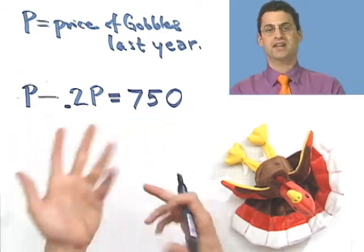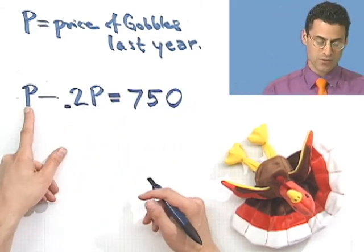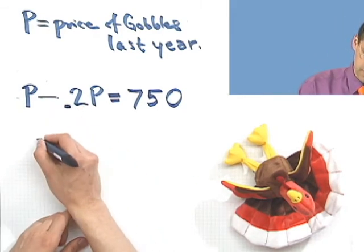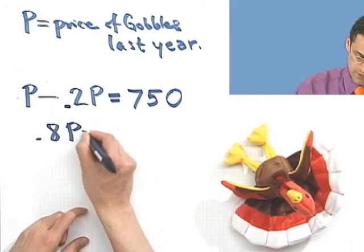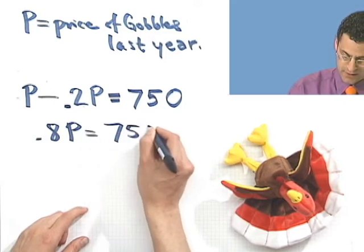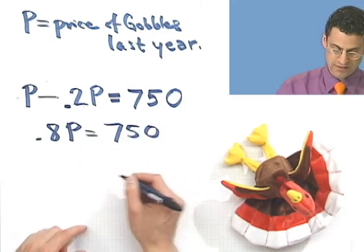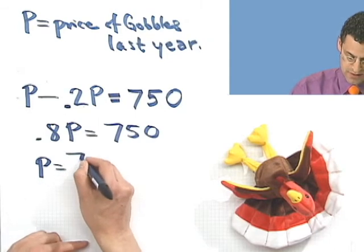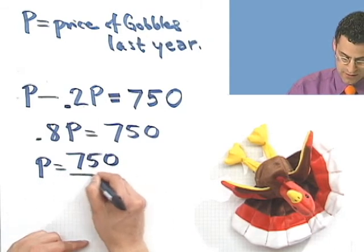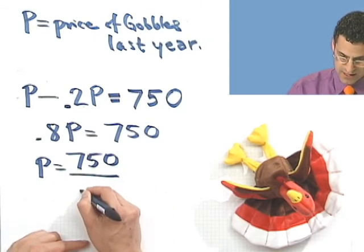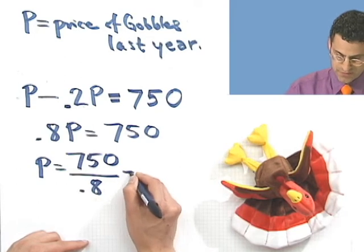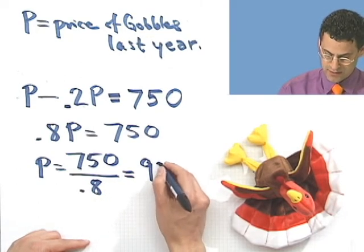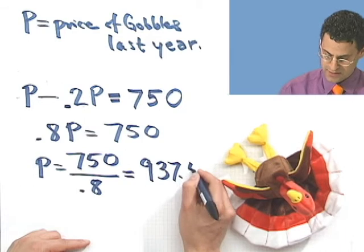So now I have the equation. It's really easy to solve this because 1P minus 0.2P is 0.8P, and that equals 750. So if I divide both sides by 0.8, what I see is that P equals 750 divided by 0.8. And if you divide that out, you'll see $937.50.